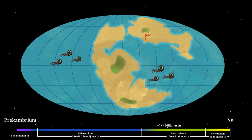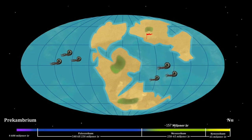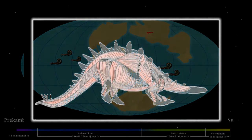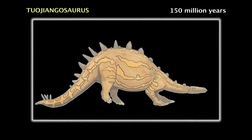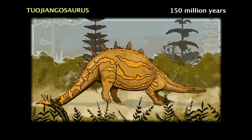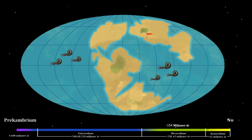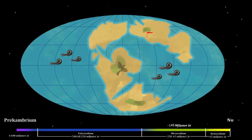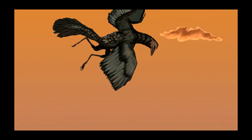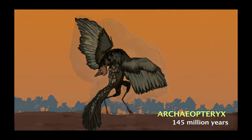In coniferous forests on land, the large reptiles dominate. A relative to the crocodile becomes the first dinosaur — here is a skeleton of a dinosaur that gets a little meat on the bones. Here is a creature that lived 145 million years ago and was a transitional form between dinosaurs and birds.